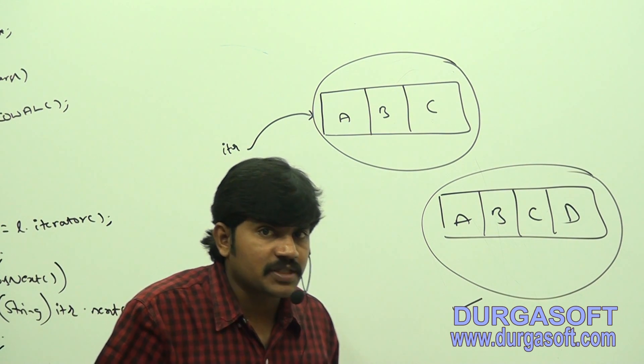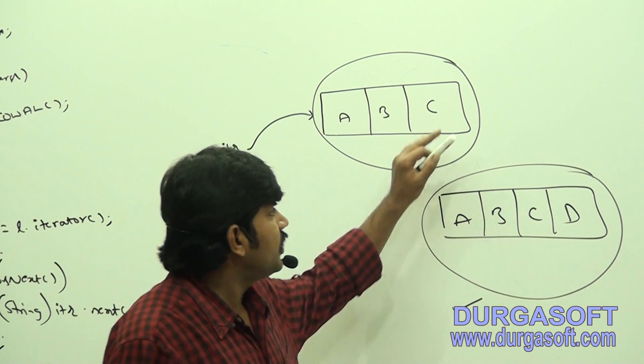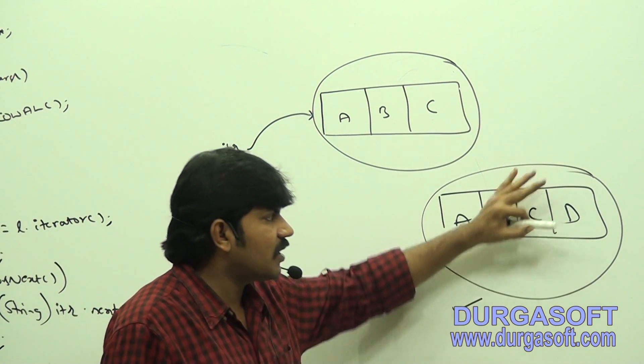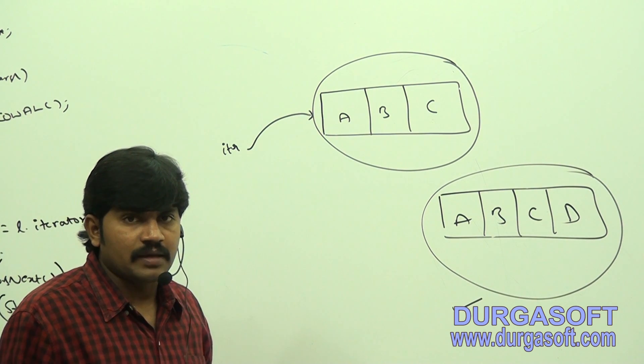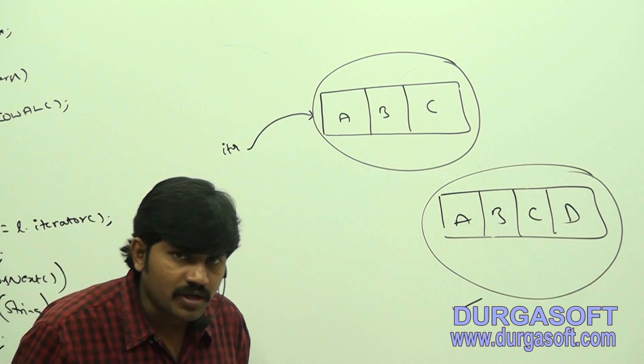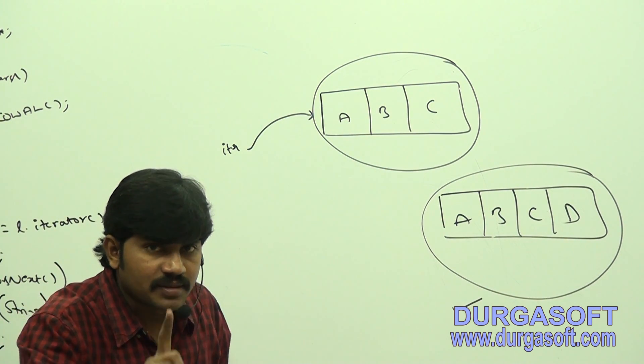Are you able to understand? Because every update operation will be performed on separate cloned copy. So here, if I am trying to add D, with that, a new object got created, but iterator is pointing to the old object only. That's why, by using this iterator, if I can read, what output by default will we get? A, B, C, but not D.